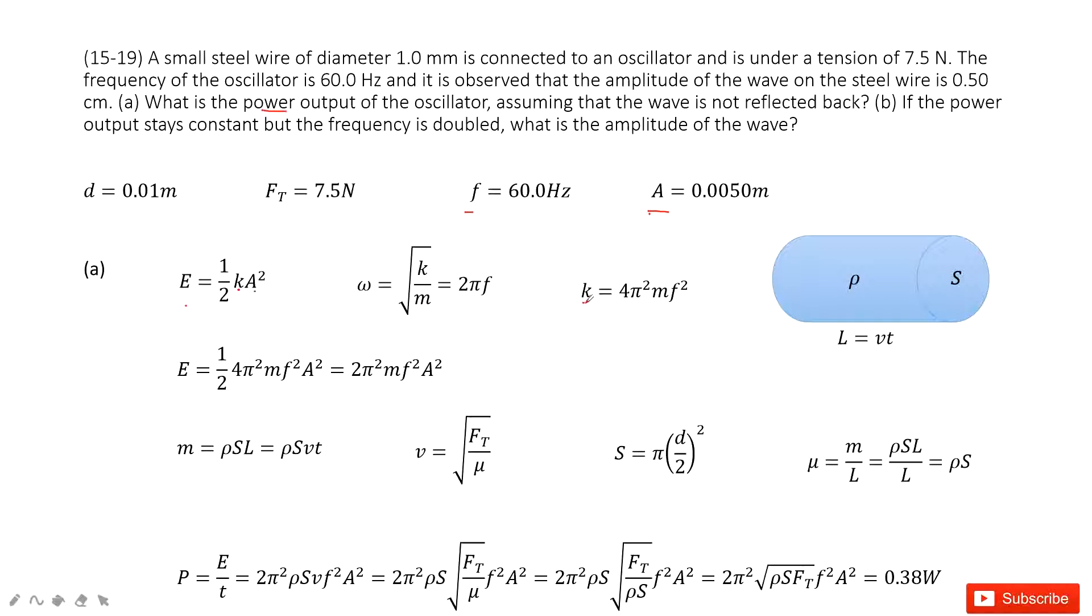Now we input k inside this function. We get the energy function equals to this one and it can be simplified as 2π squared mass f squared A squared. Now in this equation,